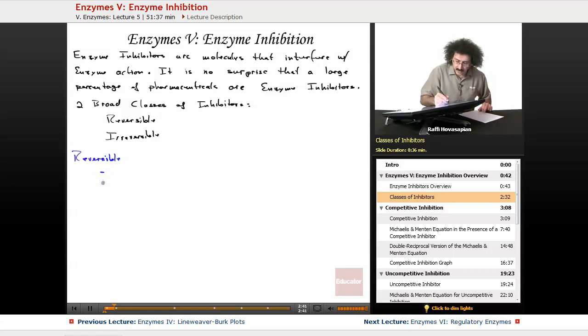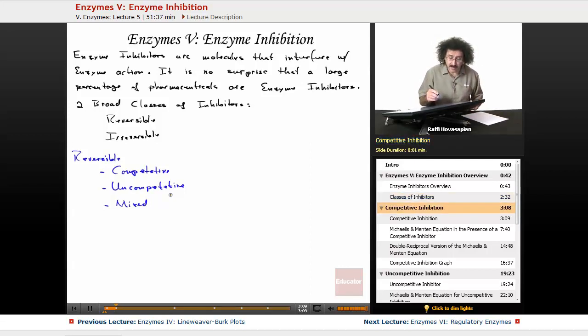The reversible comes in three varieties: something called a competitive inhibitor, an uncompetitive inhibitor, and a mixed inhibitor, mixed being a combination of competitive and uncompetitive. So let's deal with these one at a time.